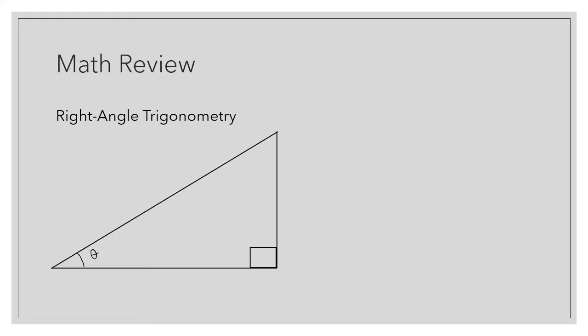First, we're going to start off with some math review. Right now, we're going to review right angle trigonometry. Assuming that everything is being assessed off of angle theta, we know that this is the opposite leg of the triangle to the angle, this is the adjacent leg, and this is the hypotenuse. The hypotenuse is always the longest length of a right angle triangle.